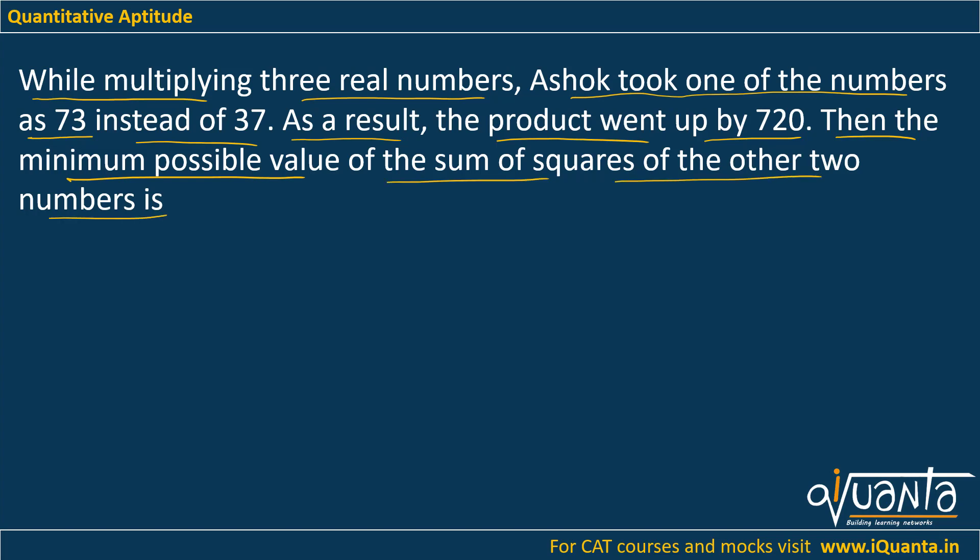So he was supposed to multiply three real numbers, but by mistake he took one of the numbers as 73 instead of 37. Let me assume that the product of the other two numbers equals x, because there was no change in the product of other two numbers—only one number was mistakenly taken as 73.